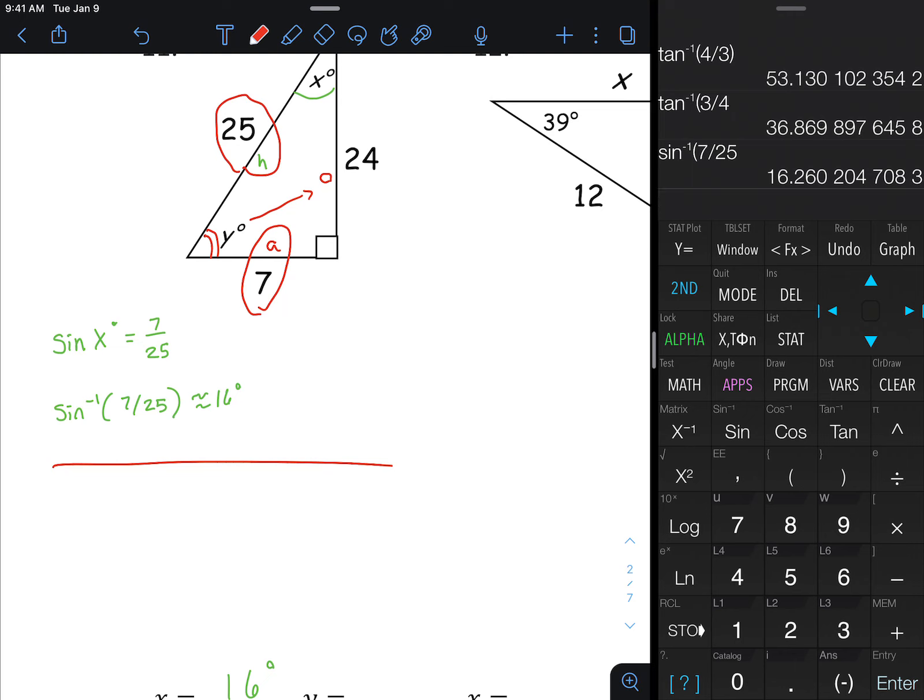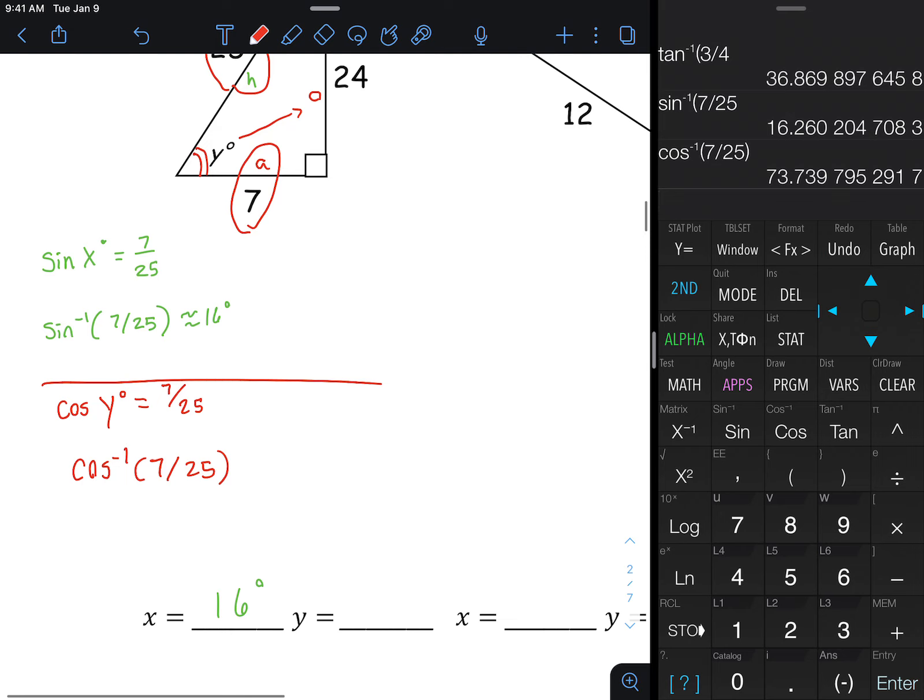So that one A and H uses cosine, that would be cosine of angle Y. Make sure you use the right variable, that will help you keep it organized at the end when you're writing your answers in. And what would that be, 7 over 25 again, and then that would be cosine inverse 7 divided by 25. You don't have to use a fraction button, you can just hit second cosine and then just do 7 divided by 25, close parentheses, and roughly 74 degrees.